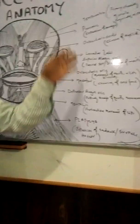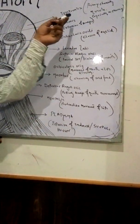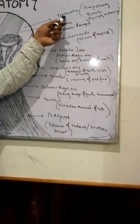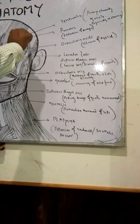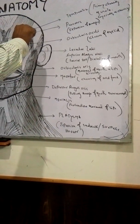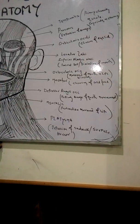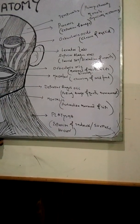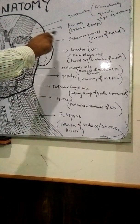First, if you look at the first muscle, it is called temporalis. This muscle is located in the temporal area. The temporalis muscle is a primary chewing muscle that helps in grinding and churning action.